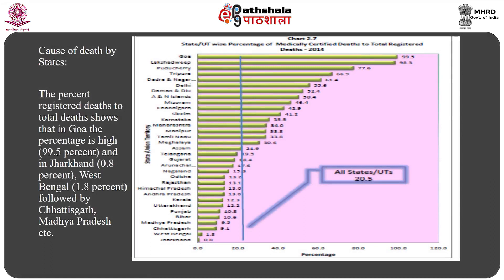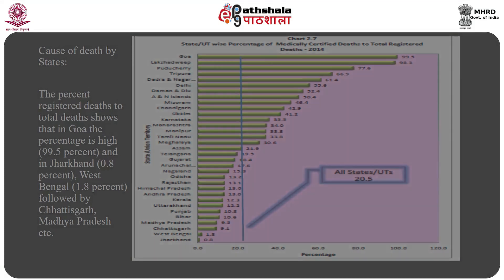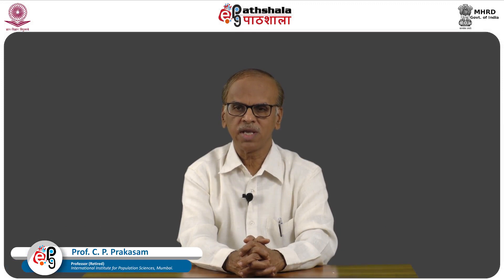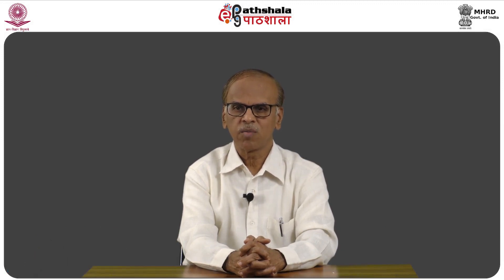Causes of death by state: the percentage of registered deaths to total deaths shows that in Goa the percentage is high at 99.5%, while in Jharkhand it is 0.8%, West Bengal 1.8%, followed by Chhattisgarh, Madhya Pradesh, etc. This percentage reveals the accuracy of death registration and coverage error of deaths by cause under MCCD. Coverage error = 100 minus (MCCD deaths divided by total deaths). In Jharkhand, the coverage error is 99.2% (100 minus 0.8%), and in Goa it is 0.5%.